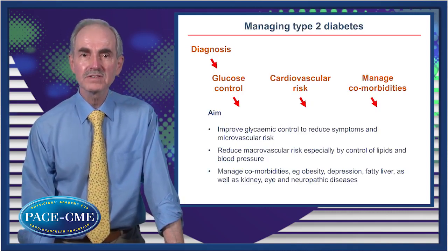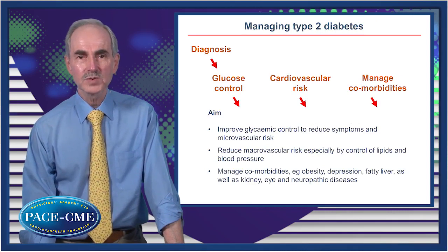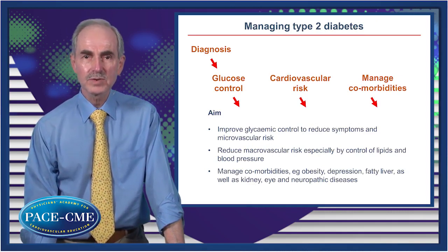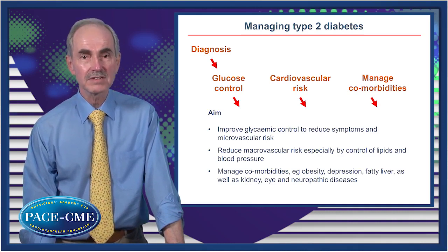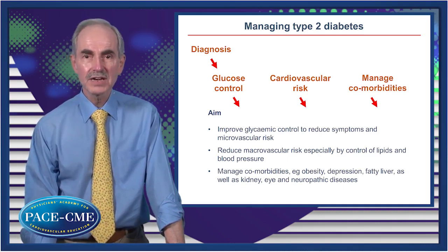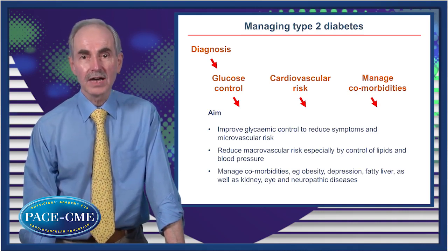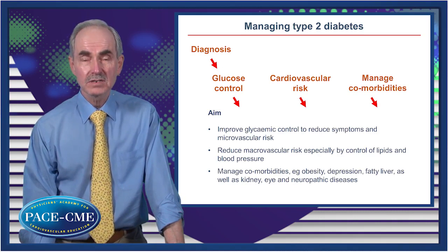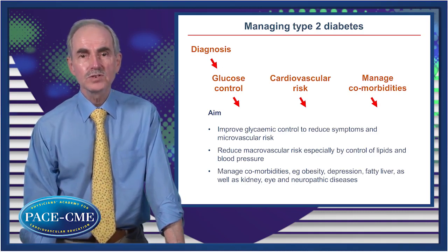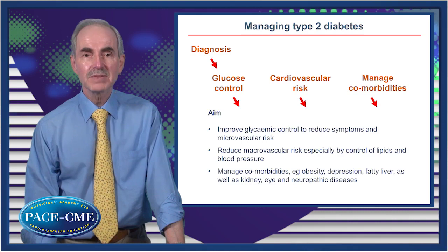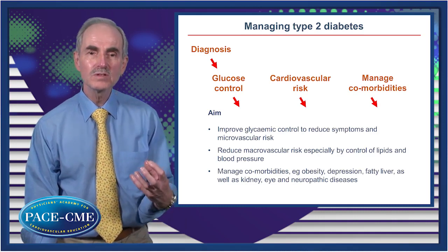After the diagnosis of type 2 diabetes, it's not just glucose control we have to consider. We also have to consider cardiovascular risk and the other comorbidities that need to be managed, prevented, or deferred. The aim of treatment is to produce glycemic control as close to normal as possible, because this will reduce the microvascular risk of nephropathy, retinopathy, and the neural diseases associated with glucotoxicity.